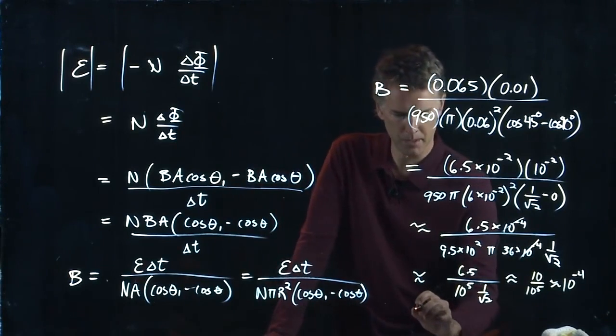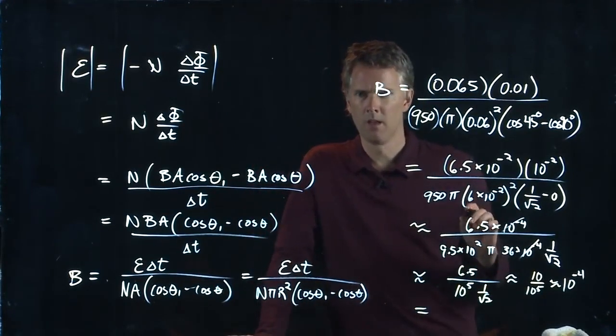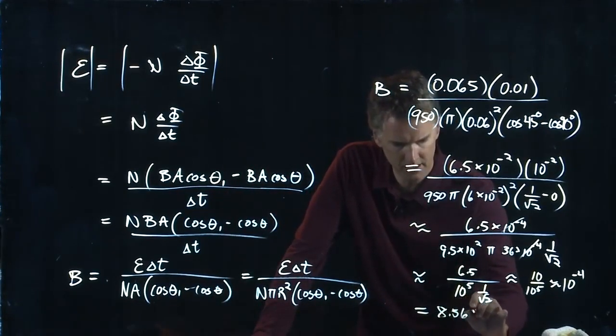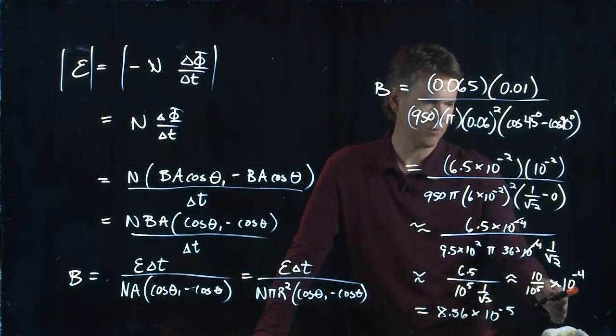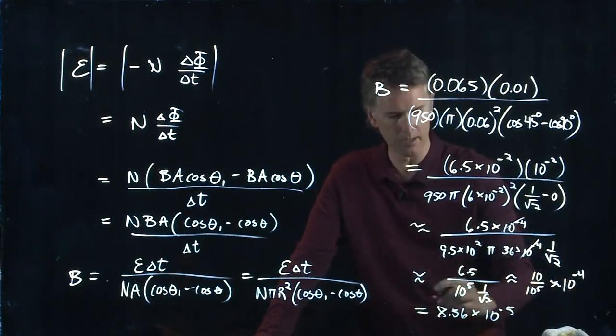That's what I'm guessing. Anybody punch into your calculator and get an answer? 8.56 times 10 to the negative 5. Good, so that was a decent guess, right? Because 10 times 10 to the negative 5 would be 10 to the minus 4.